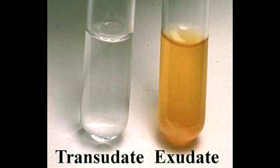Define transudate. Transudate is extravascular fluid with low protein content and low specific gravity. An easy way to remember transudate is that fluid goes through tight blood vessels. Because the blood vessels are still tight, only small molecules are able to go through. The fluid going through tight blood vessels will be a little transparent — to help you remember transudate.